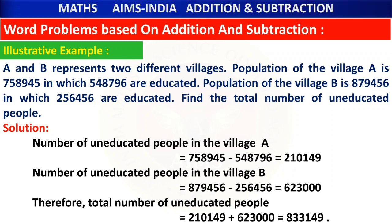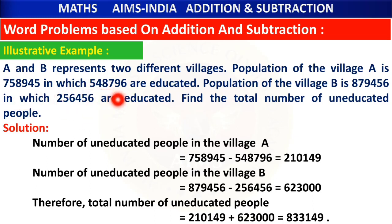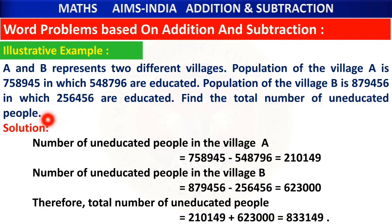Now word problems based on addition and subtraction together. A and B represent two different villages. Population of village A is 7 lakhs 58,985, of which only 5 lakhs 48,796 are educated. Population of village B is 8 lakhs 79,456, of which only 2 lakhs 56,456 are educated. Find the total number of uneducated people.